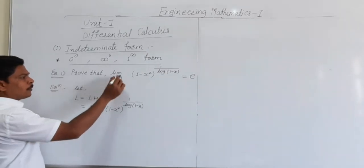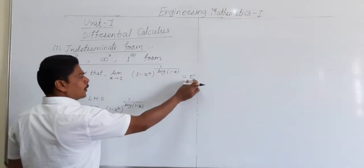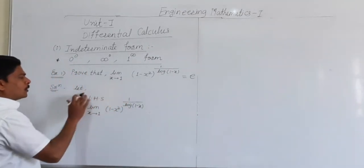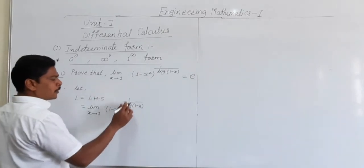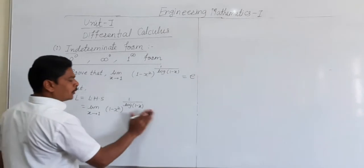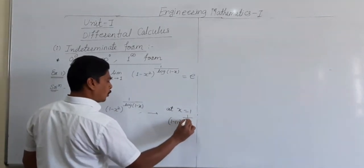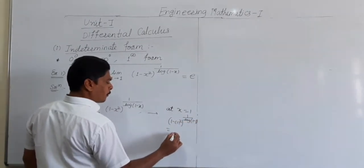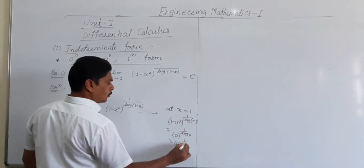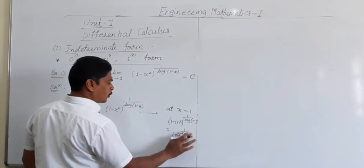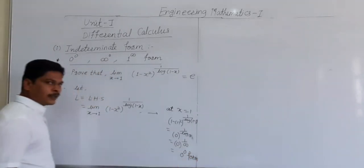First example: prove that limit x tends to 1 of (1 minus x) raised to 1 upon log(1 minus x) is equal to e. Consider this limit as L, which equals LHS. At x equal to 1, the function becomes (1 minus 1) raised to 1 upon log(1 minus 1), which gives 0 raised to 1 upon log 0. Since log 0 is infinity, and 1 upon infinity is 0, this is the 0 raised to 0 indeterminate form.